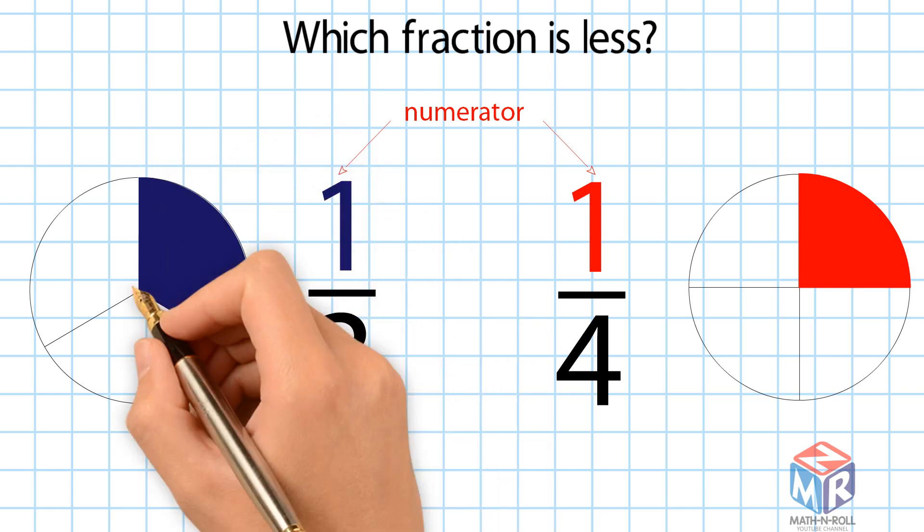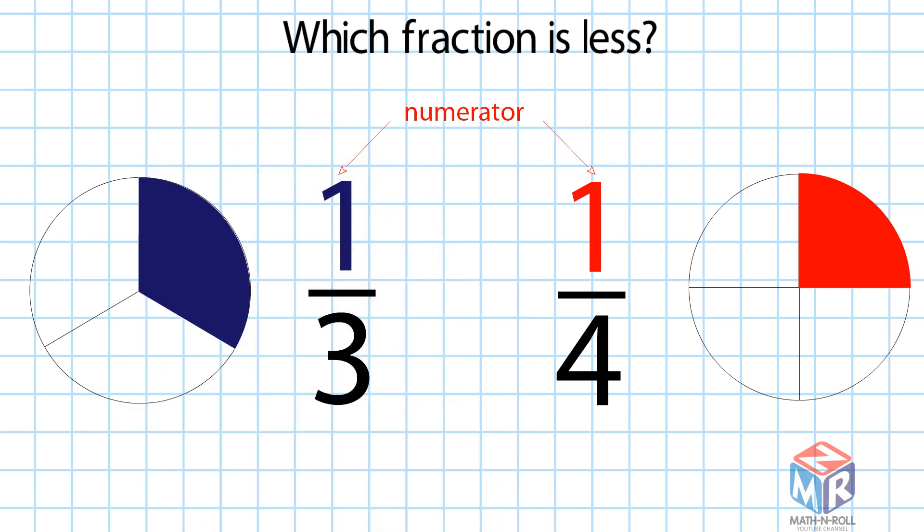Both shapes have one colored part, but the part in the second shape is smaller. This is because the second shape is sliced into 4 parts instead of 3.